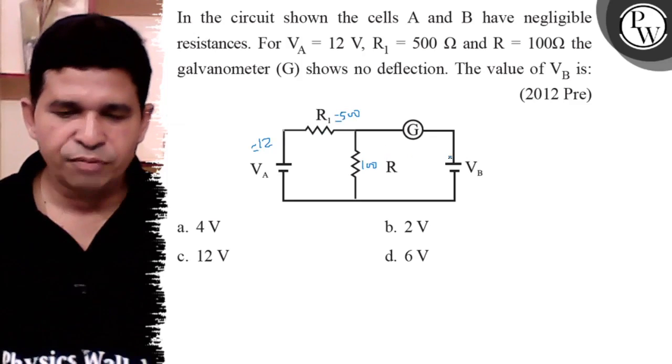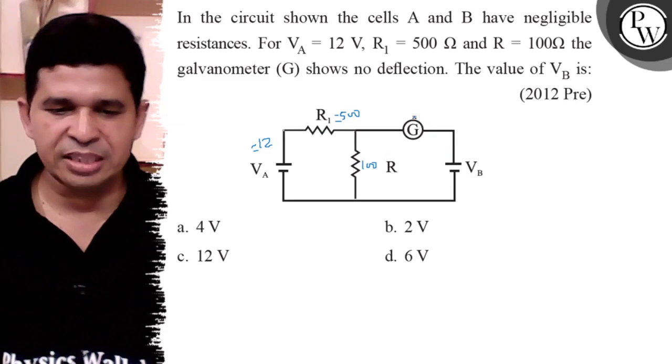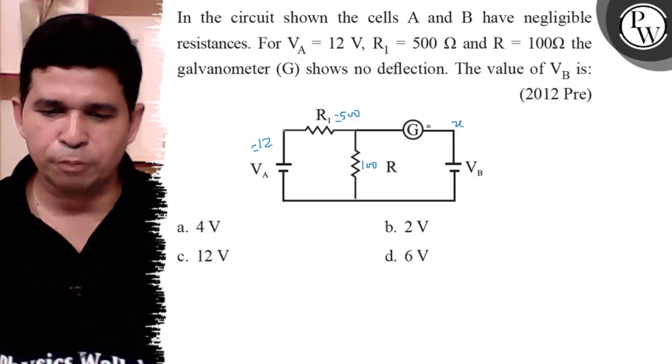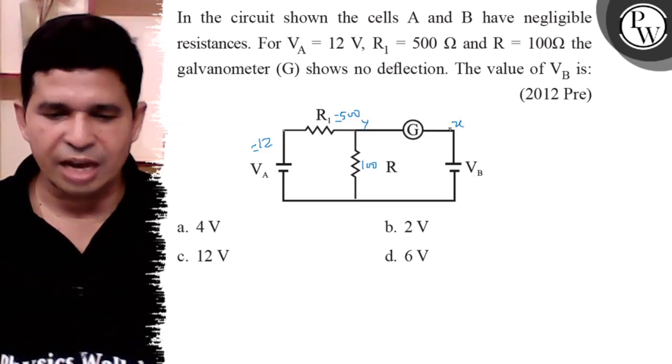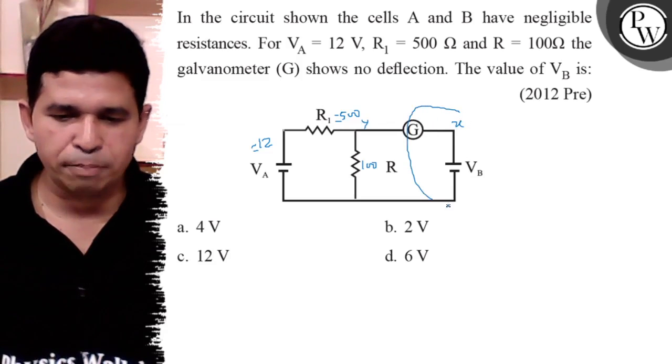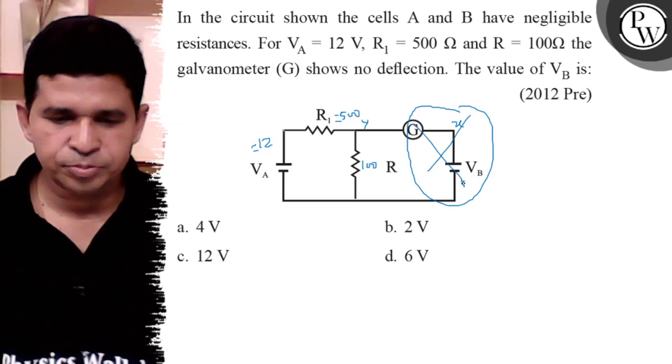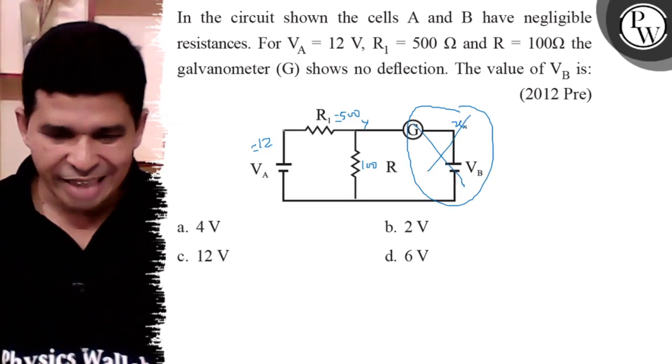We know that the galvanometer having zero deflection means the potential of X and Y is equal. So there is no current in the galvanometer, so it is not part of the circuit. The voltage across X and Y is equal.